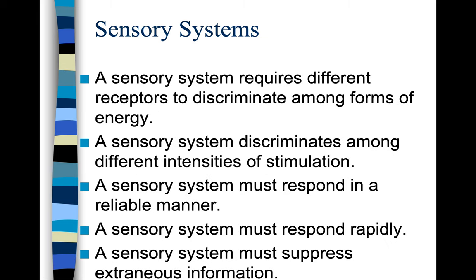A sensory system requires different receptors to discriminate among forms of energy. It discriminates among different intensities of stimulation, must respond in a reliable and rapid manner, and must suppress extraneous information. We don't want to take in information that's not important.